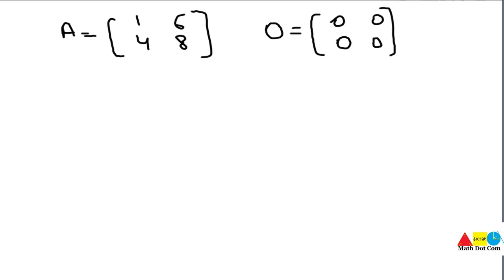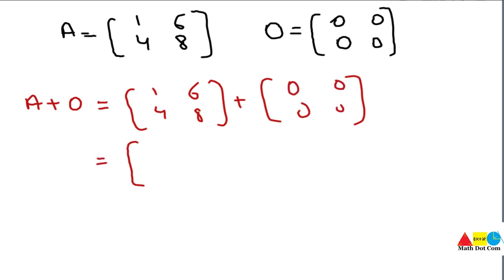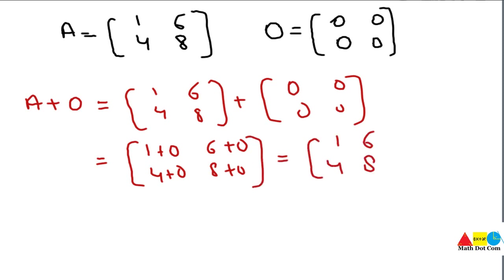To apply the condition of the additive identity, we add the two matrices together following the rules of matrix addition. A plus O equals A: the matrix [1, 4; 6, 8] plus the zero matrix gives us, by adding corresponding elements — 1+0, 6+0, 4+0, 8+0 — the result [1, 4; 6, 8], which equals matrix A. The condition is satisfied, confirming O is the additive identity.